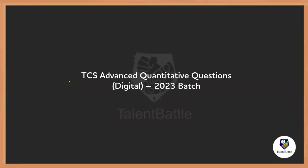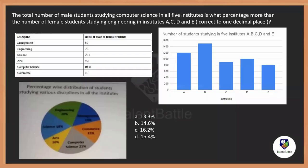Let's get started with the very first question. One small point before I start: when I display the question, please give it a try by pausing the video. Once you are done solving or trying, just resume the video and check whether you were able to solve the question before the explanation. Okay, let's start. This question: the total number of male students studying computer science in all five institutes is what percentage more than the number of female students studying engineering in institutes A, C, D, and E?